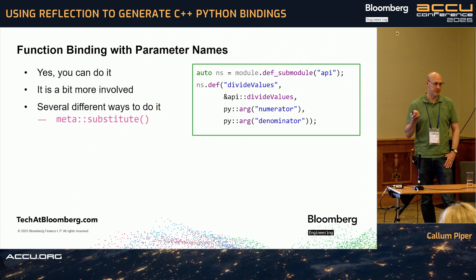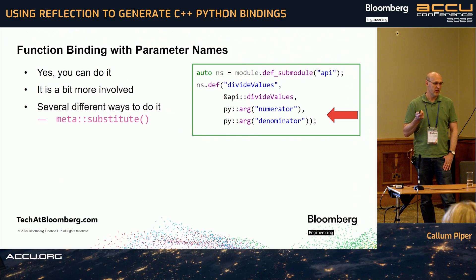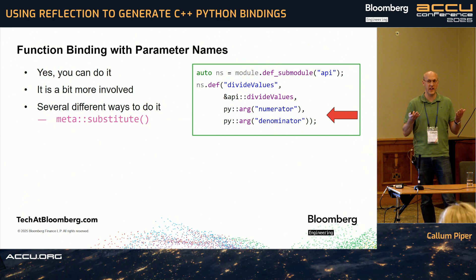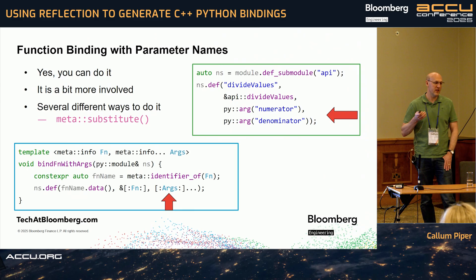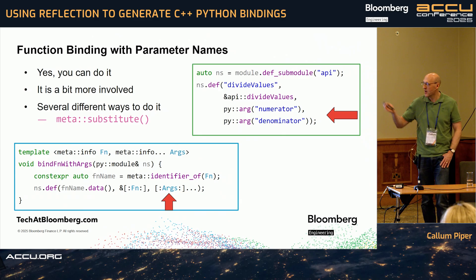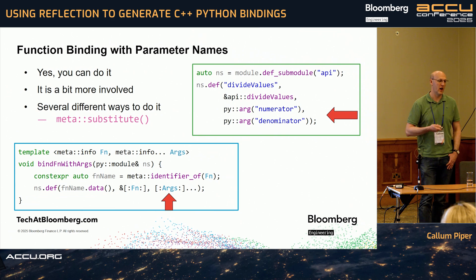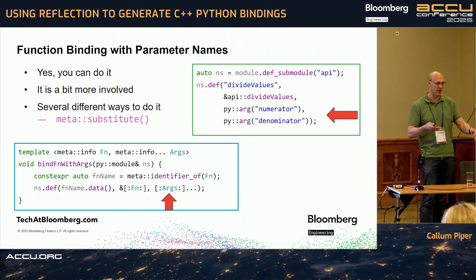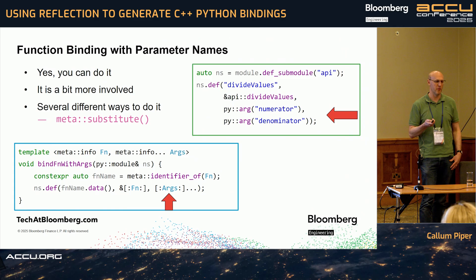Functions have parameters, so can you bind the parameter names? Yes, you can — it's not as easy as it should be, but it works. With PyBind 11, you add py::args with the names. So if you've got a function 'divide_values', you care which order the parameters go and need to know which is the numerator and which is the denominator, so you pass that through to anyone calling it from Python. You can use the 'substitute' method to instantiate the bind function with args, passing in the reflections of the py::args as those args parameters. There are a few hoops to jump through, but it works.